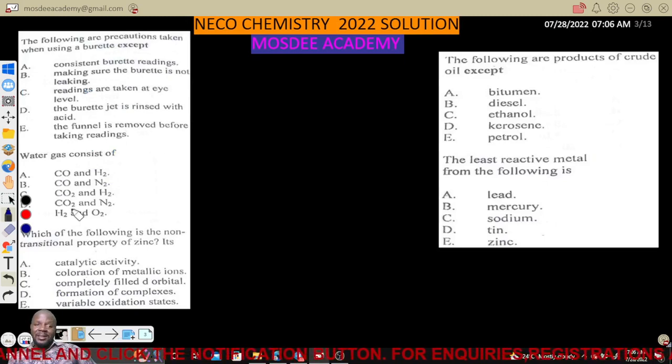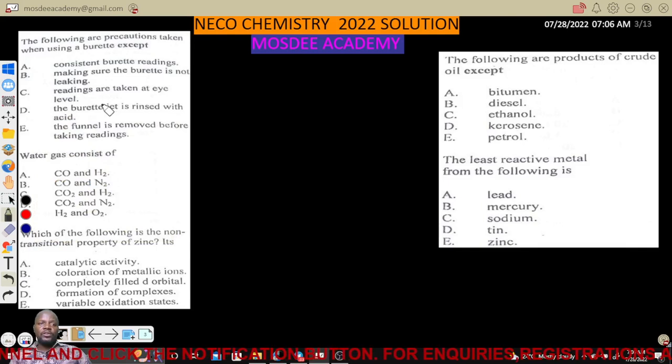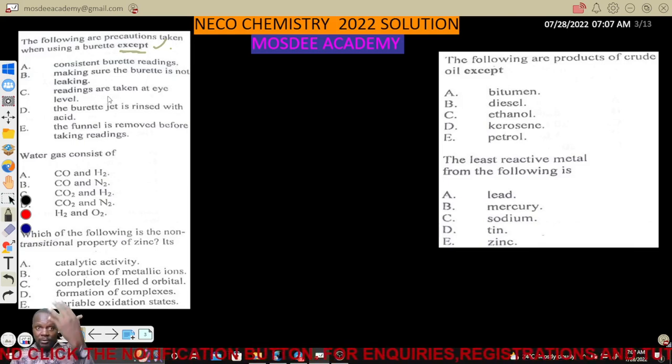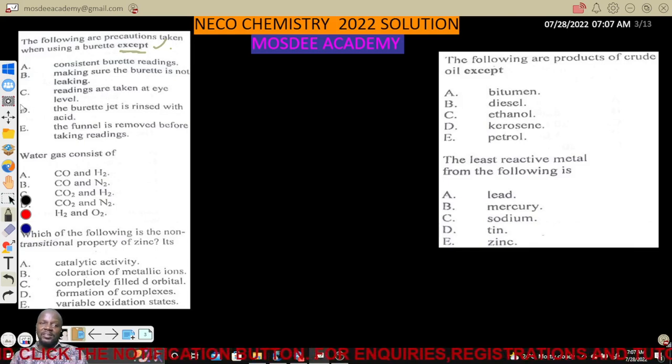Question 7: Precautions when using a burette - except which? Rinsing burette with acid is incorrect; you rinse with water. Question 8: Water gas consists of carbon monoxide and hydrogen, formed when steam is heated with red hot coke.